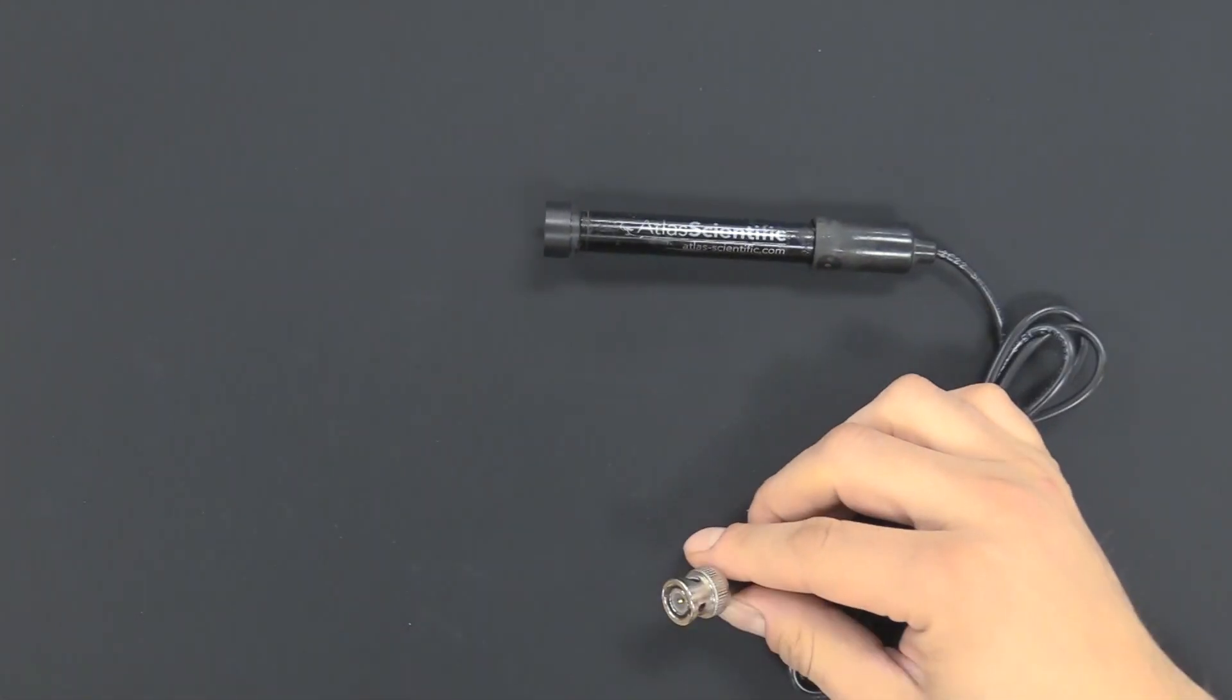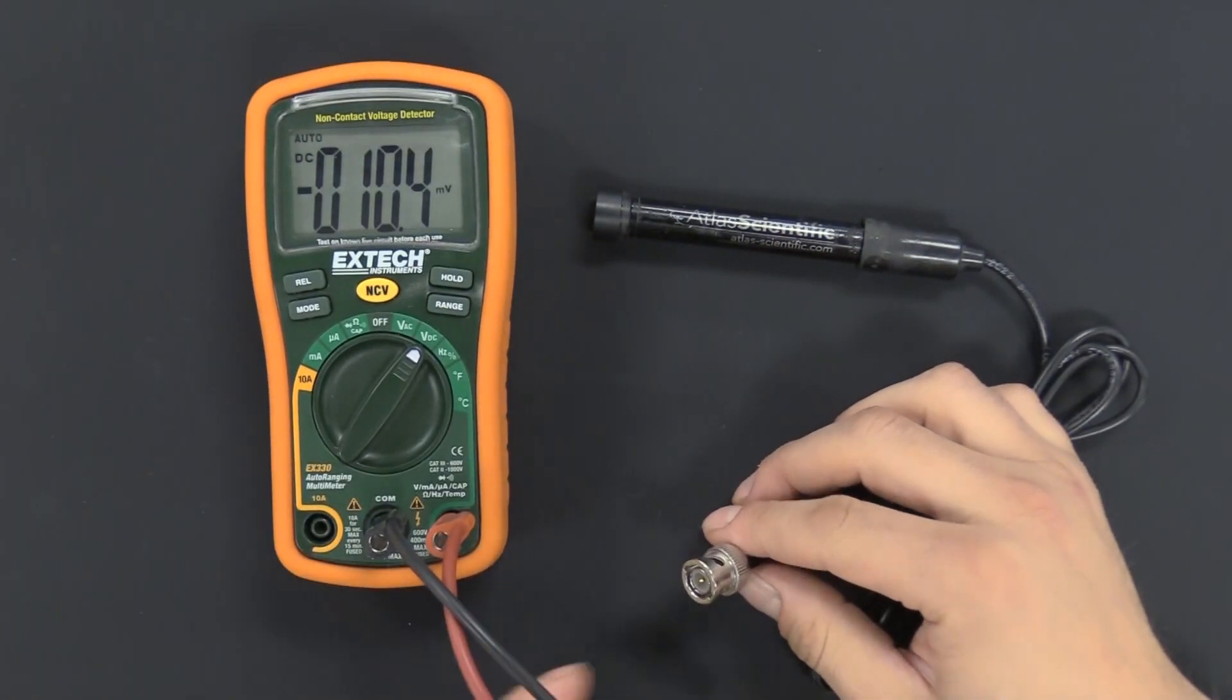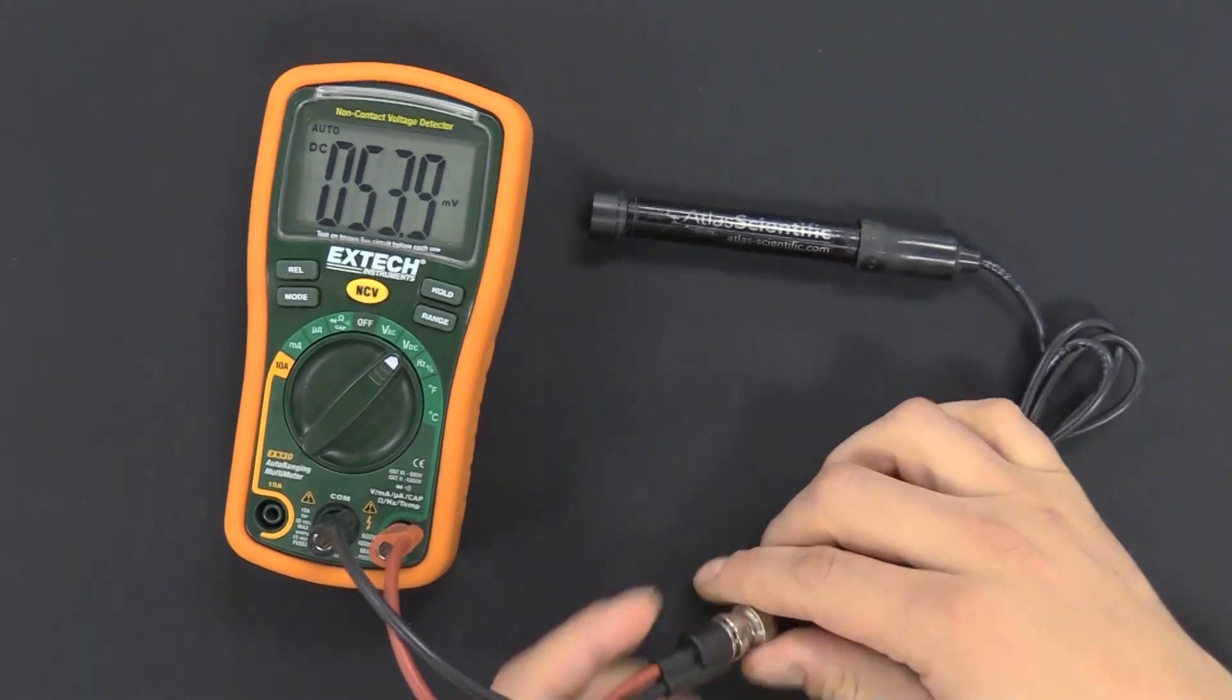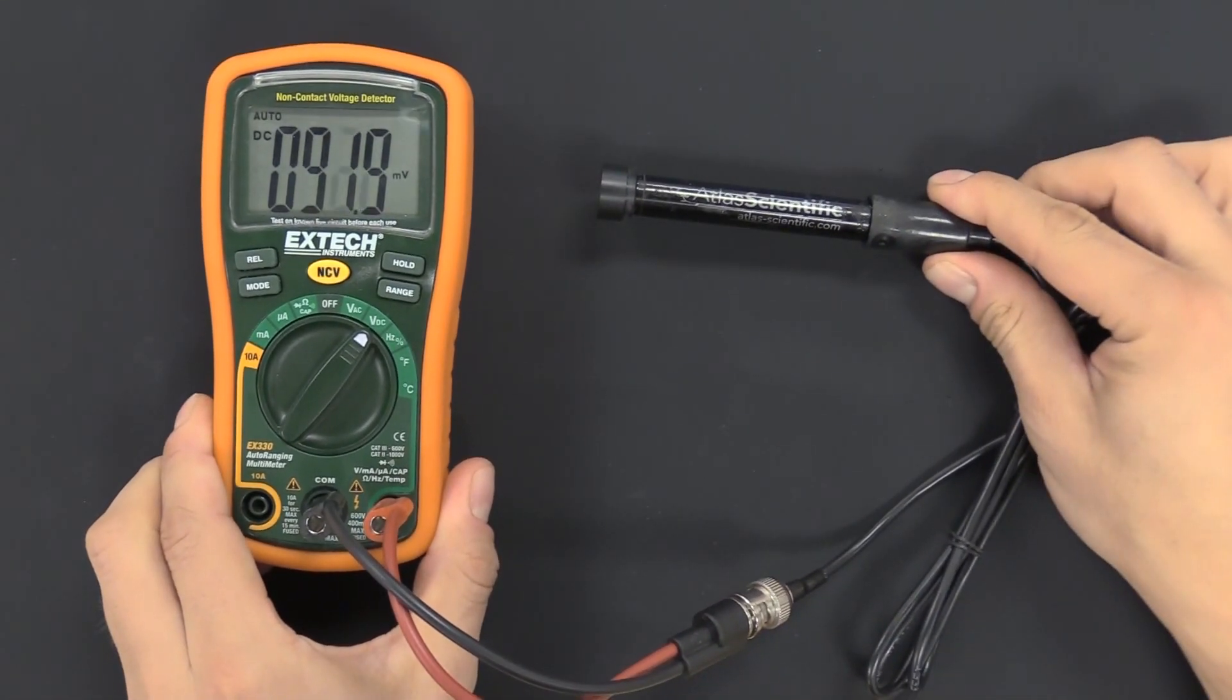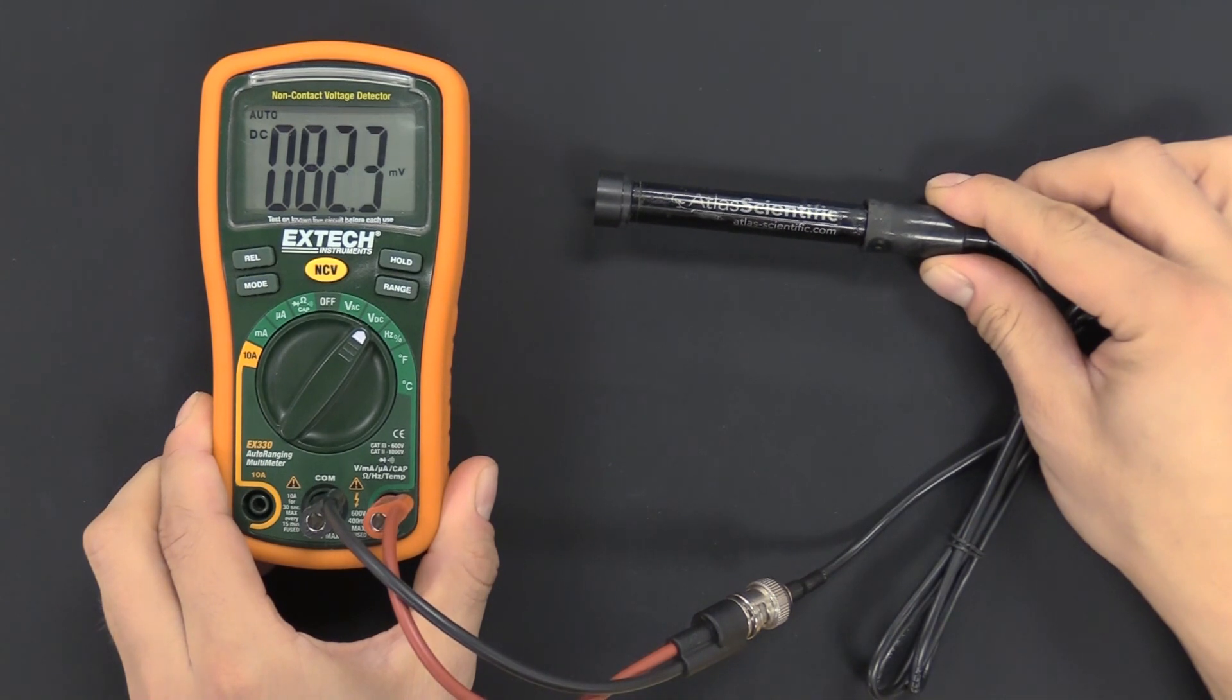So we have a new membrane cap and new electrolyte. Now to confirm, we can connect it to a multimeter. Again, remember, you don't want to do this for very long. You can see the readings are much higher, and of course they're dropping.